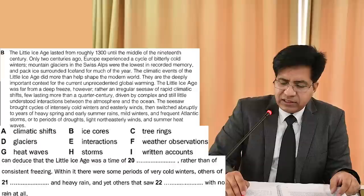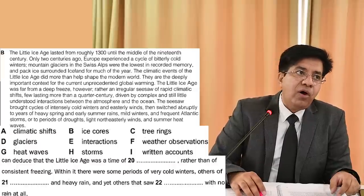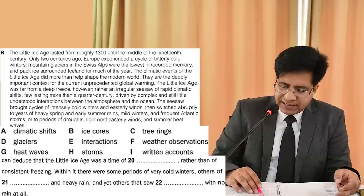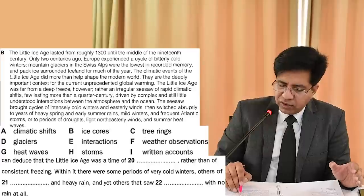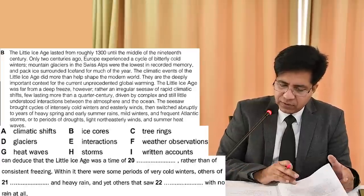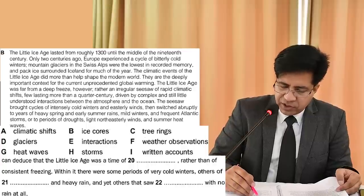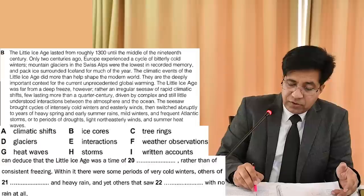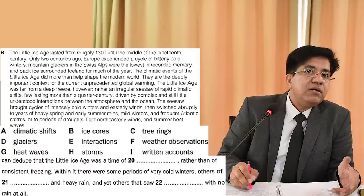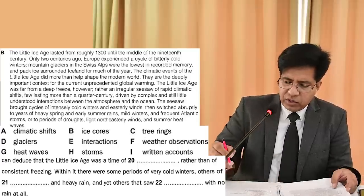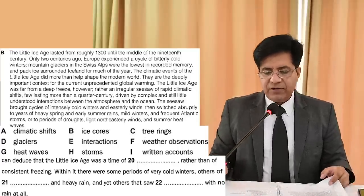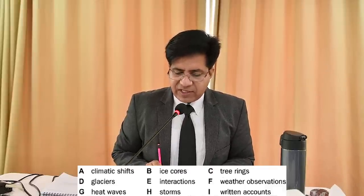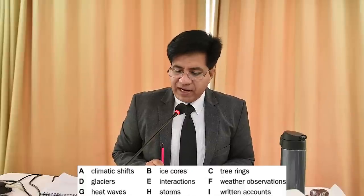Question 22: 'And yet others that saw dash with no rain at all.' Reading on in the passage: 'periods of droughts, light north-easterly winds and summer heat waves.' Drought means no rain at all — so the answer for question 22 is G. To summarize: question 18 is C, question 19 is B, question 20 is A, question 21 is H, and question 22 is G.